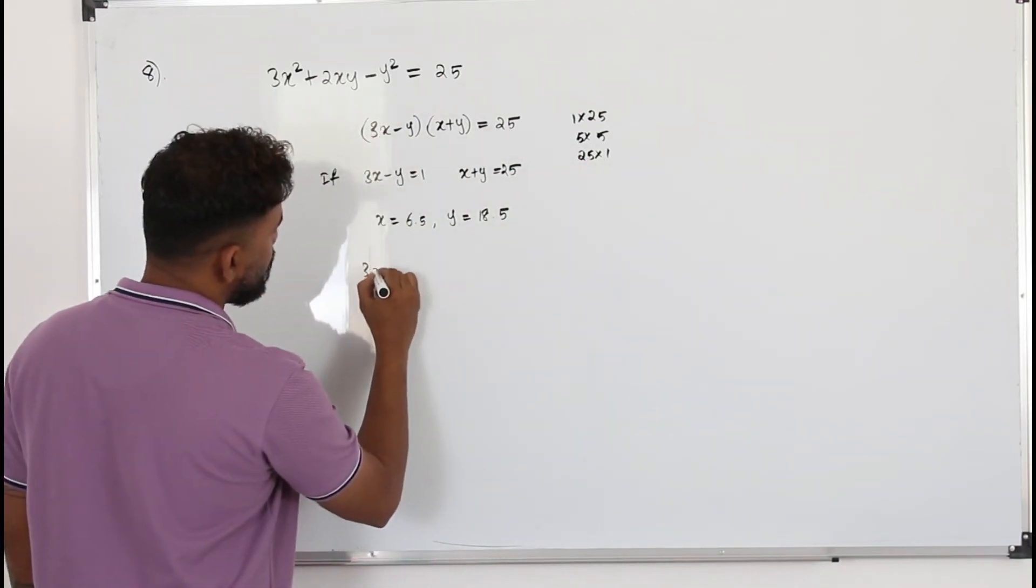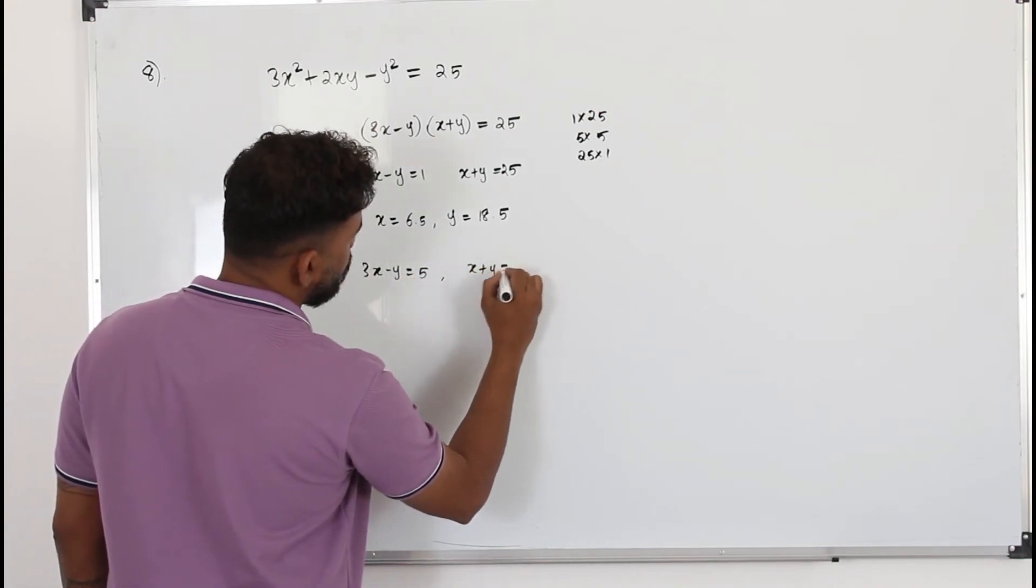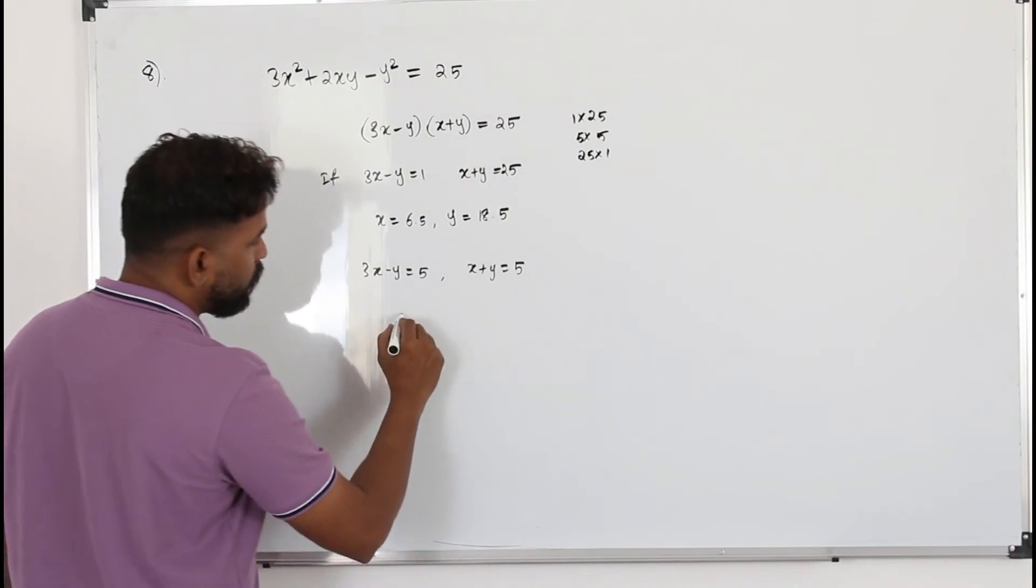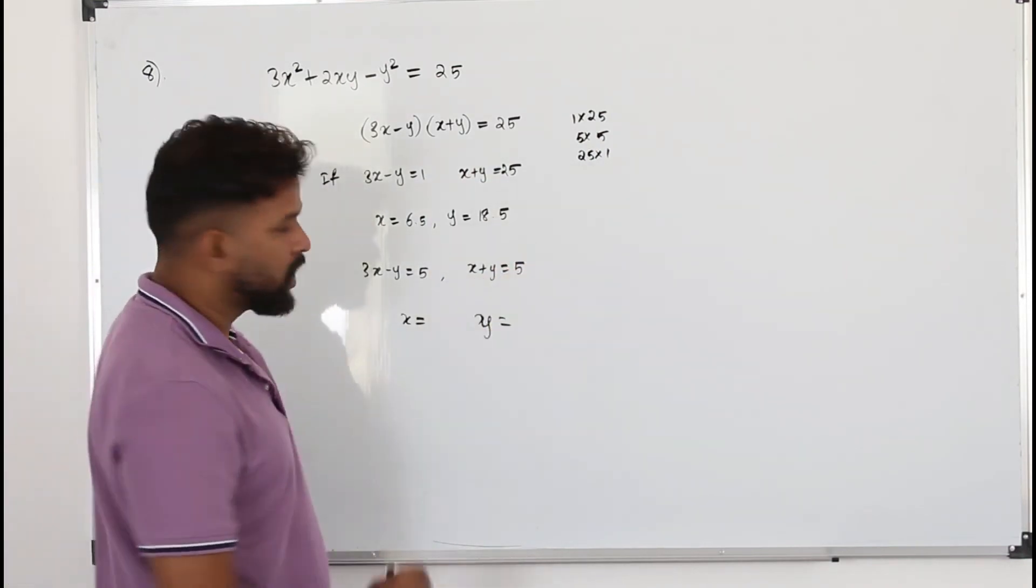So take the first one: 3x minus y as 5 and x plus y as 5, and find x and y. Do the same thing for this case also.